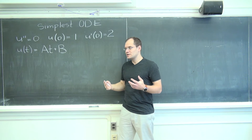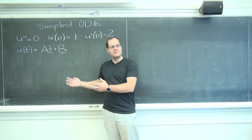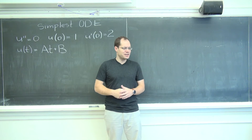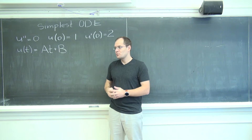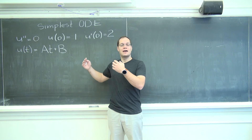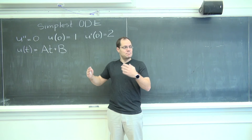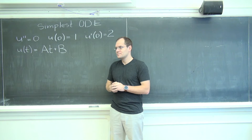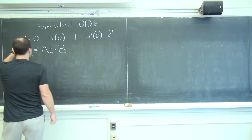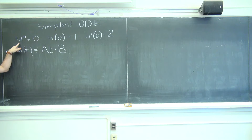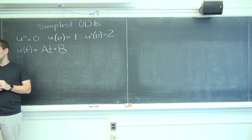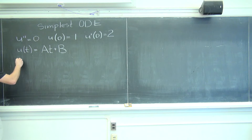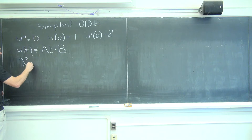Another way to do it is the way we would have done it if it were a more complicated second-order linear ordinary differential equation with constant coefficients, which is to write down the characteristic polynomial, solve it, and depending on how the roots work out, do what you're supposed to do. So what's the corresponding equation? Lambda squared equals zero.